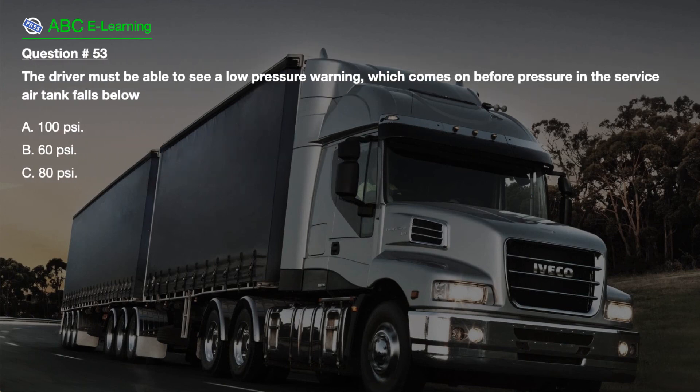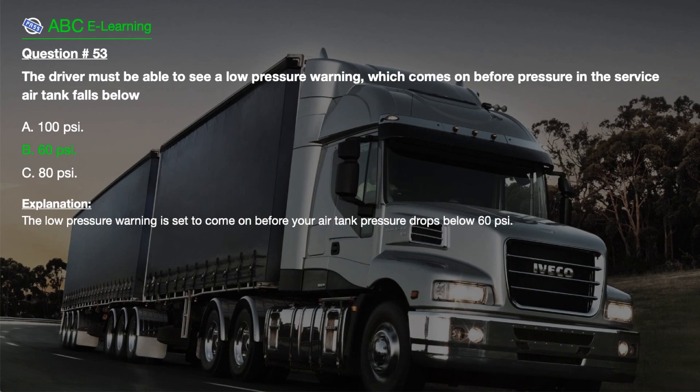Question number 53. The driver must be able to see a low-pressure warning, which comes on before pressure in the service air tank falls below: A. 100 PSI. B. 60 PSI. C. 80 PSI. The correct answer is B. 60 PSI. Explanation: The low-pressure warning is set to come on before your air tank pressure drops below 60 PSI.